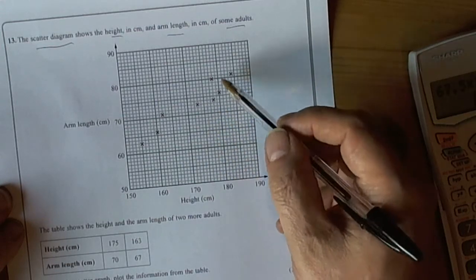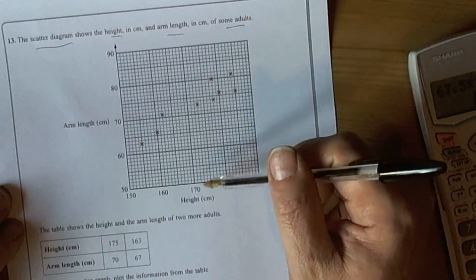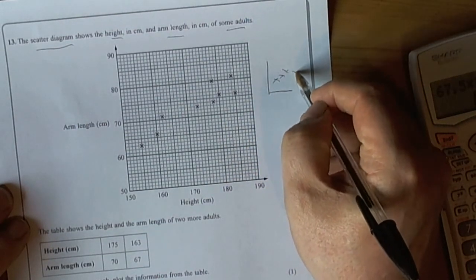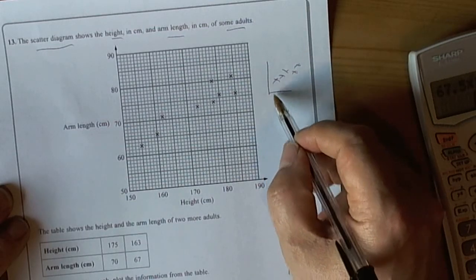So the kind of words we get involved with this type of area are things like positive correlation and negative correlation. So positive correlation is where the crosses generally go up, which means as one variable increases in value the other variable does.